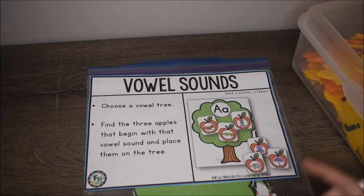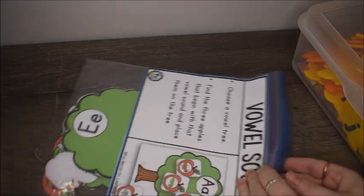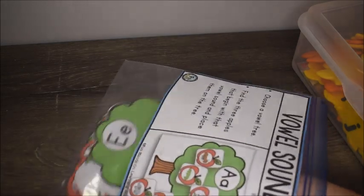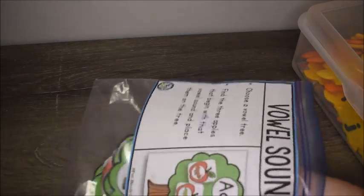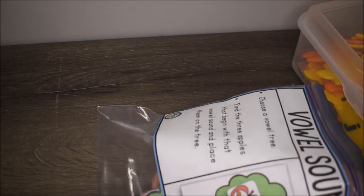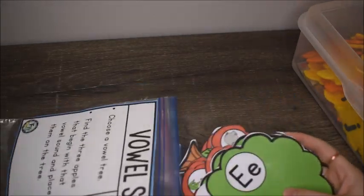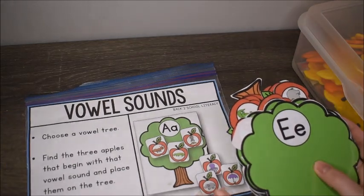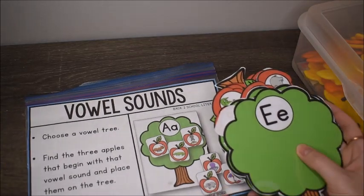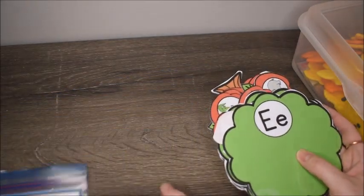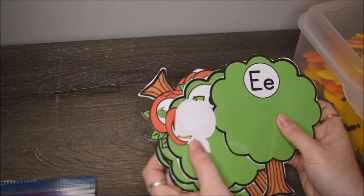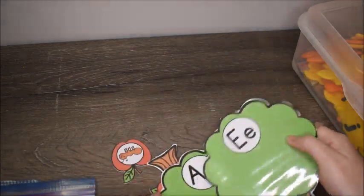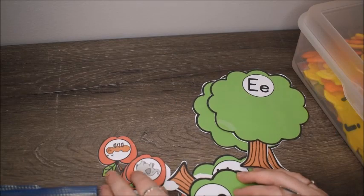This first activity works on vowel sounds — we're going to be practicing A, E, I, O, and U. With my pre-K and kindergarten kids, when we do the alphabet and pre-literacy skills, the first letters I like to teach are vowels because those are the most important. This activity has vowel apple trees.